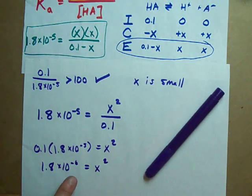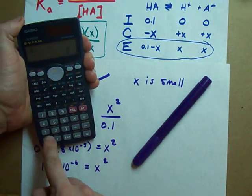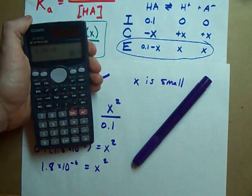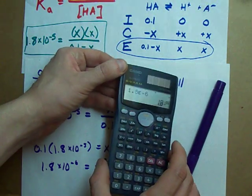That gives me 1.8 times 10 to the negative 6 equals X squared. How do you solve for X here? The answer is, with your calculator, 1.8 times 10 to the power of negative 6.